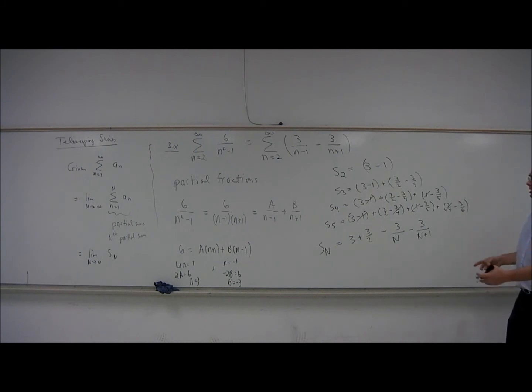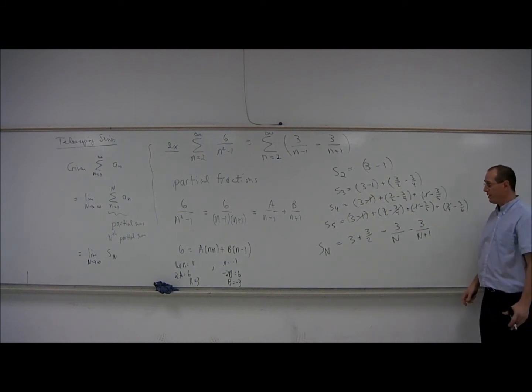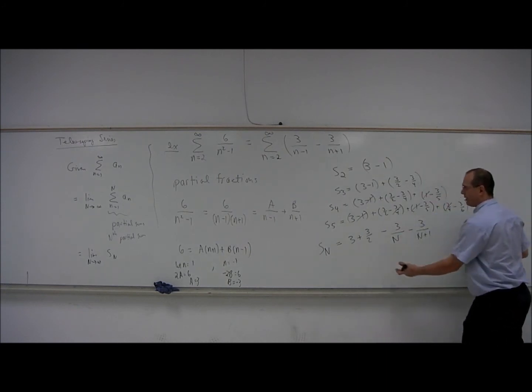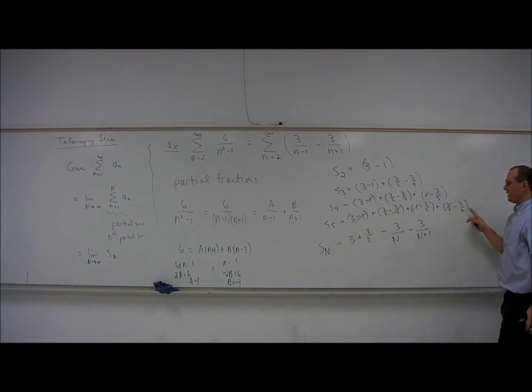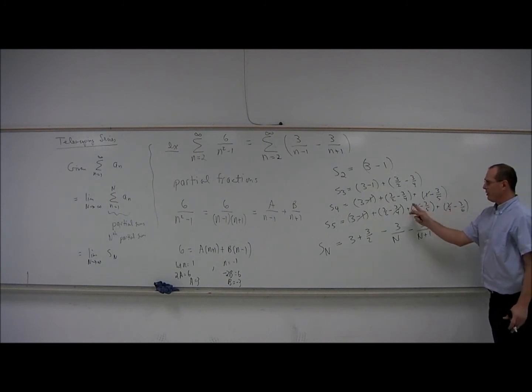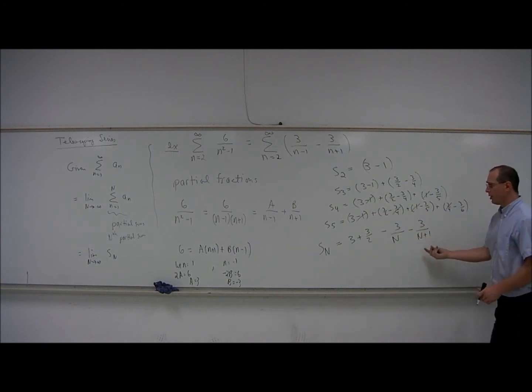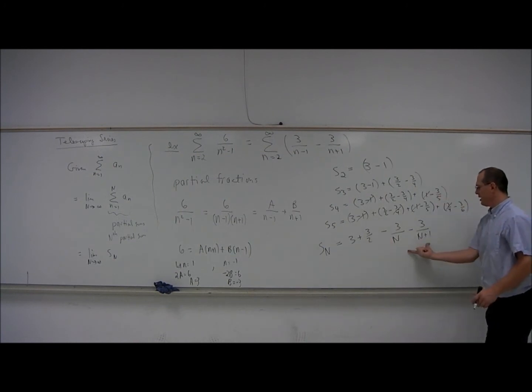This is called a telescoping series because it's kind of collapsing like a collapsible telescope. S and n would have a lot of numbers in it, but they're mostly going to cancel. We'll be left with just these four - the first two at the beginning and the last two at the end.